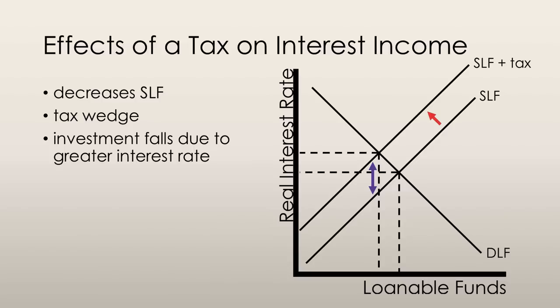We can see how this works by looking at the market for loanable funds. When interest income is taxed, the incentive to save money diminishes. After the tax is applied, the supply of loanable funds curve shifts to the left because people save less. This results in a new equilibrium at a higher interest rate. A tax wedge exists here as well, and it works the same way as with personal income tax — it is the vertical distance between the SLF and SLF plus tax curves. We know from previous lectures that when the interest rate increases, investment decreases, because it is now more expensive to loan money from the bank. However, for someone who is still saving their money in the bank, despite the rise in the real interest rate, the after-tax interest rate falls. The after-tax interest rate is at the point where the new equilibrium quantity of loanable funds intersects the original supply curve of loanable funds.